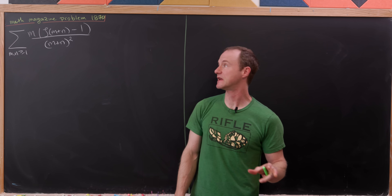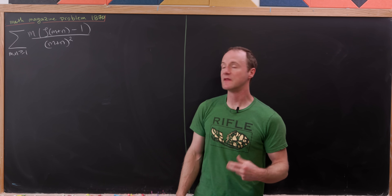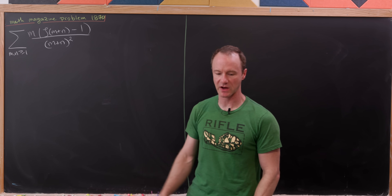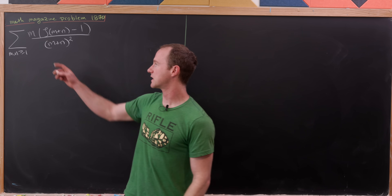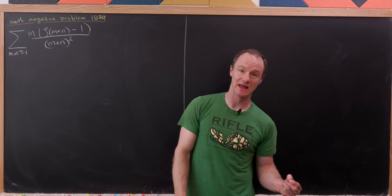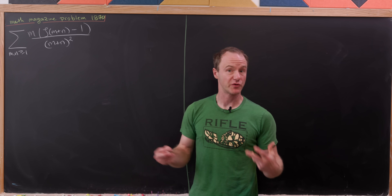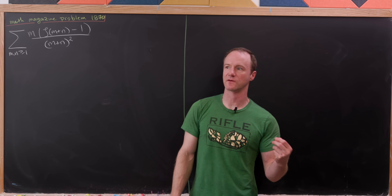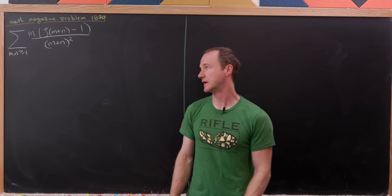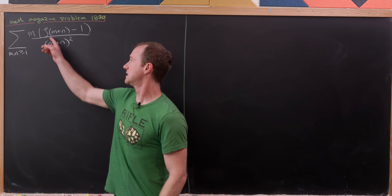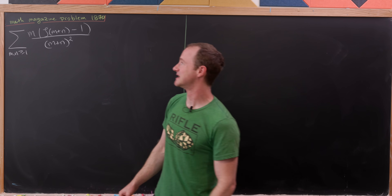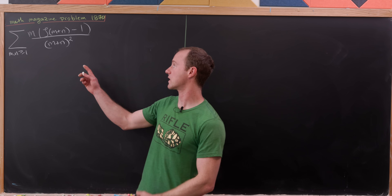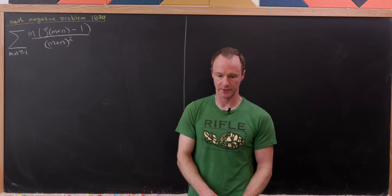Today we're going to look at a pretty cool infinite double sum that involves the Riemann zeta function. We're going to take the sum as m and n are both bigger than or equal to 1, so they both trend from 1 to infinity, of m times zeta of m plus n minus 1 over m plus n squared.